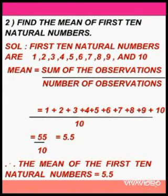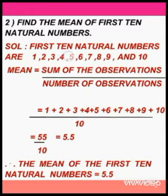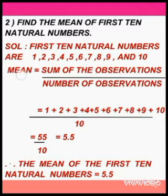Let us move to the next sum. In exercise 1, this is the 7th sum: Find the mean of the first 10 natural numbers. The first 10 natural numbers are 1, 2, 3, 4, 5, 6, 7, 8, 9 and 10. What is the mean formula? Sum of the observations by number of observations. Here, sum of the observations means you have to add all the first 10 natural numbers.